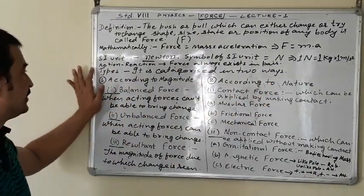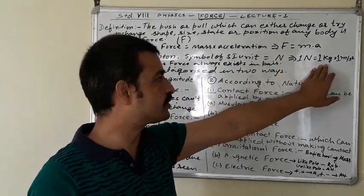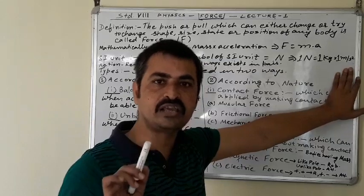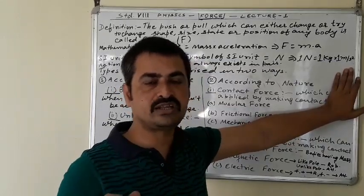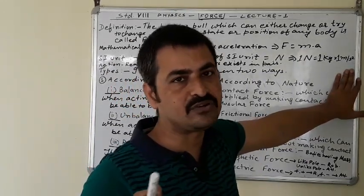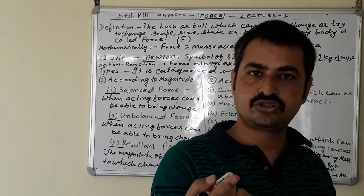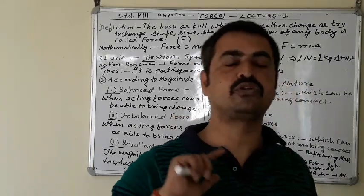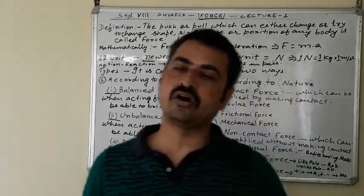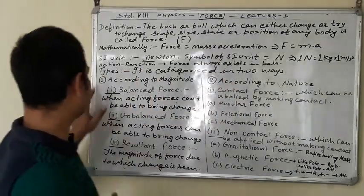One Newton is defined as the force required to give a body of mass 1 kg an acceleration of 1 metre per second squared. If a body applies 1 Newton of force on you, you also apply 1 Newton back on it. If you apply 5 Newtons on any body, that body applies 5 Newtons back on you, but in the opposite direction.